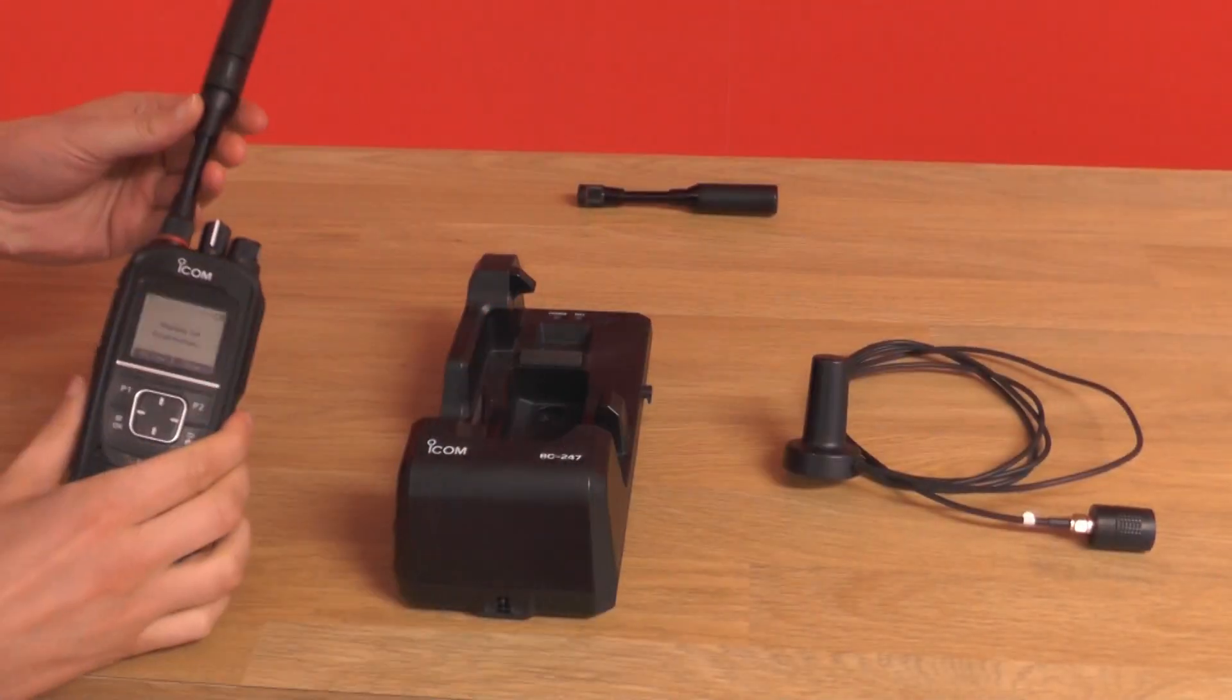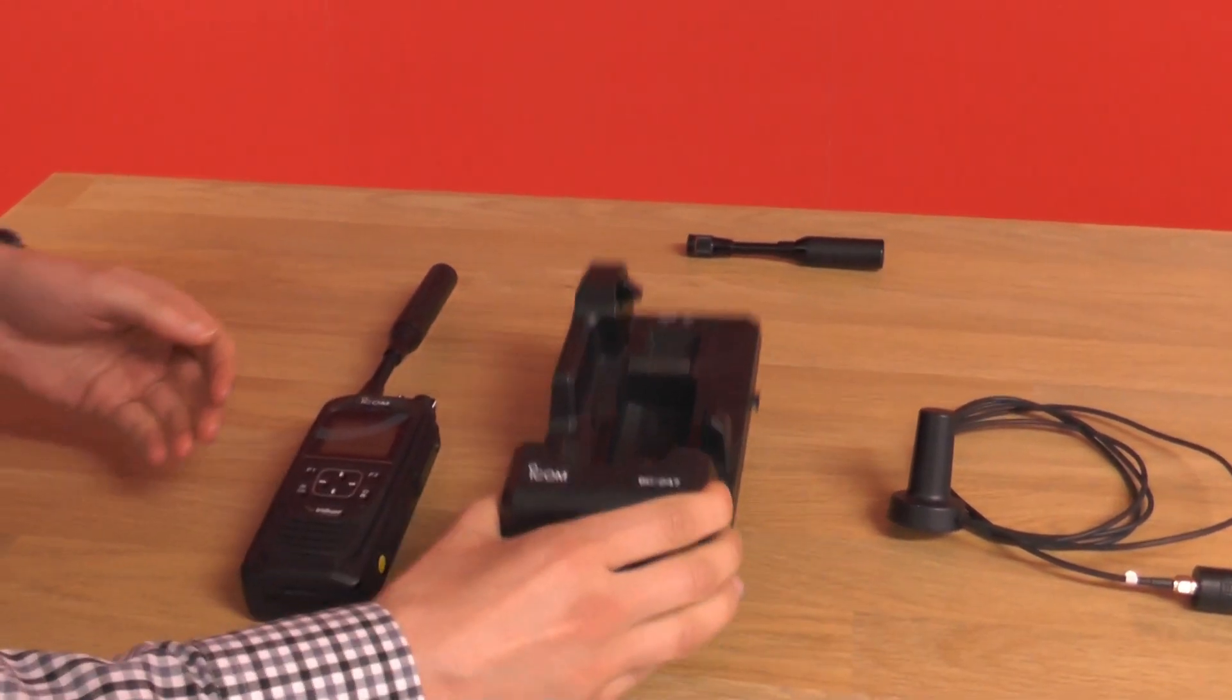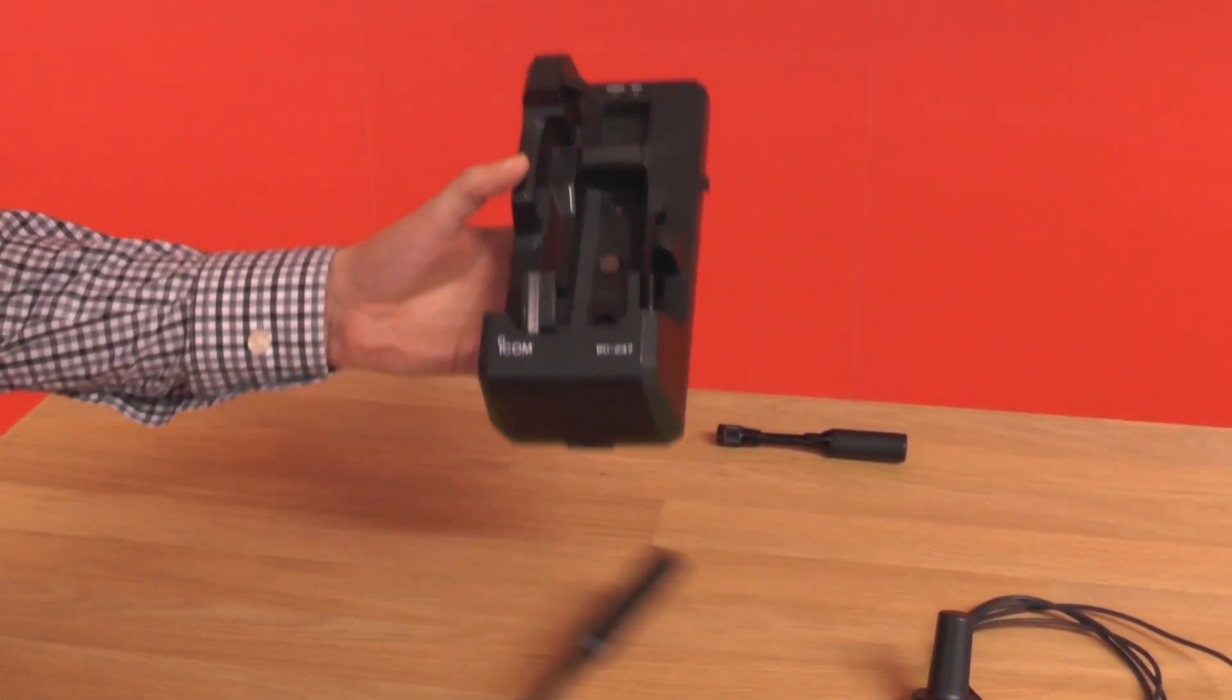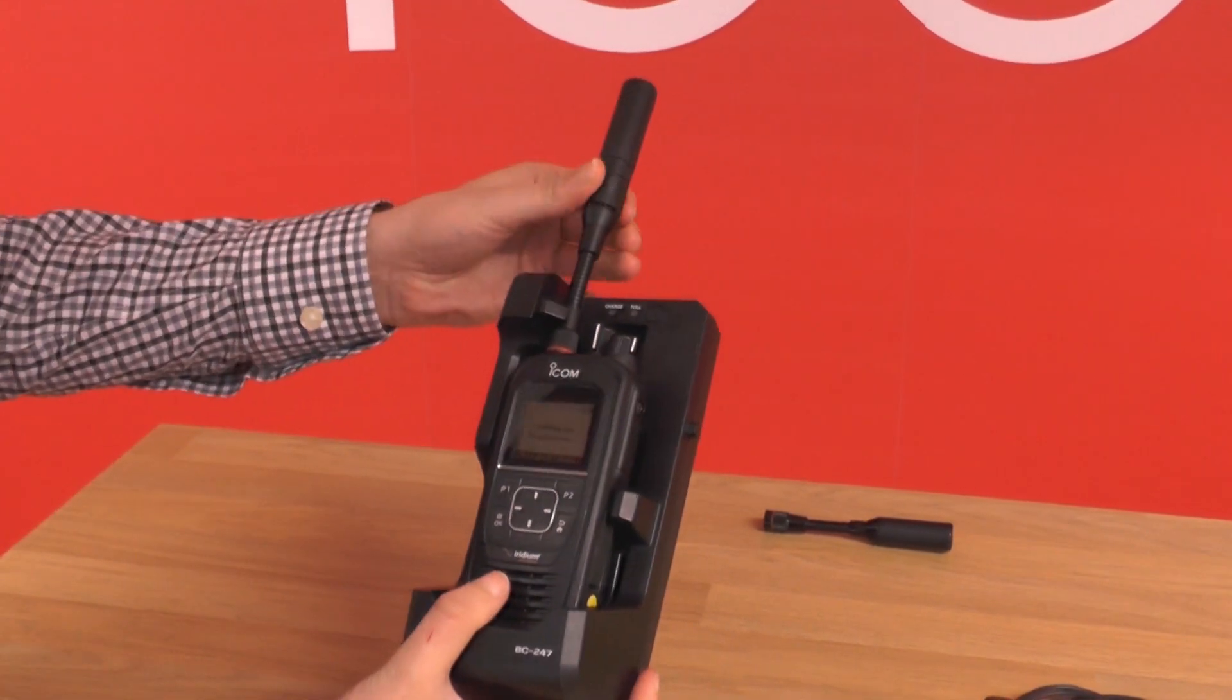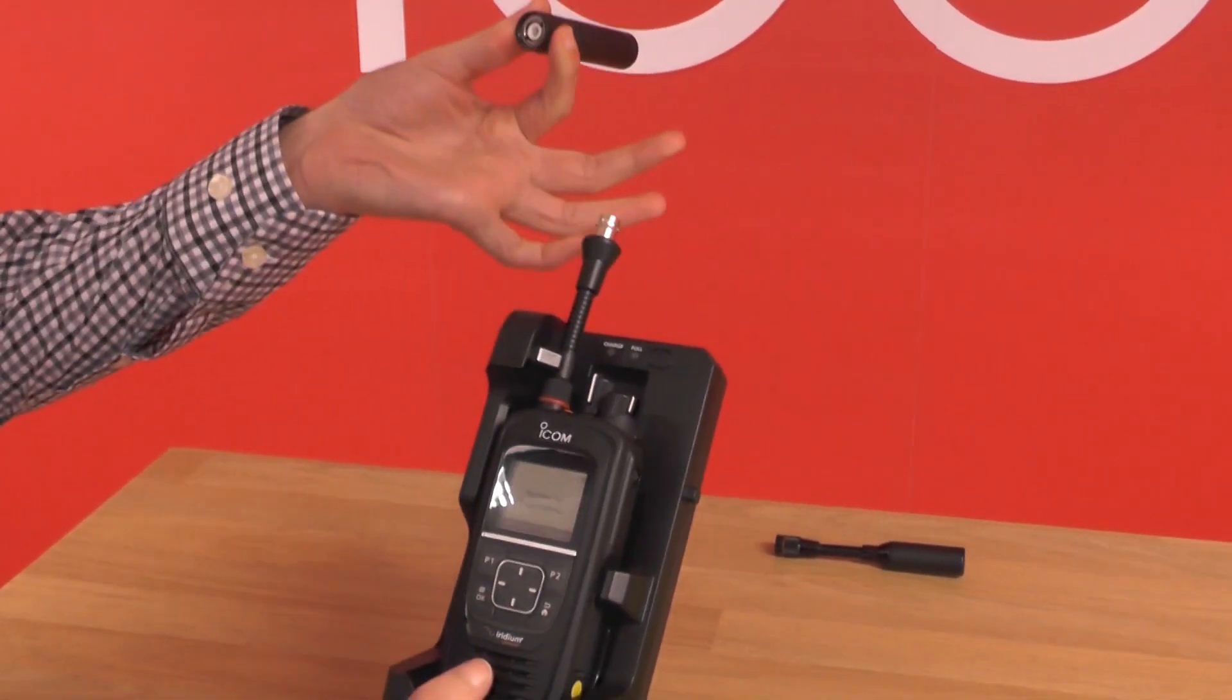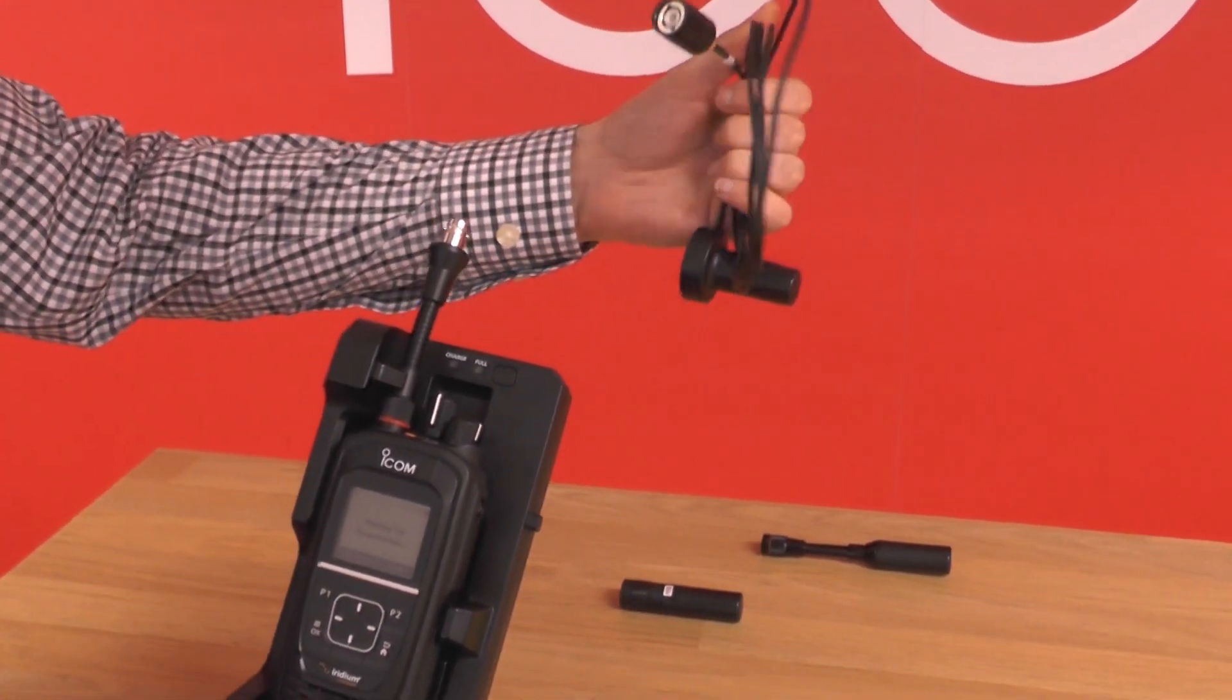The benefit of this quick release antenna kit is if you're using the SAT100 in vehicle BC247, you just twist the end of the antenna and you can connect an external antenna such as the AH40.